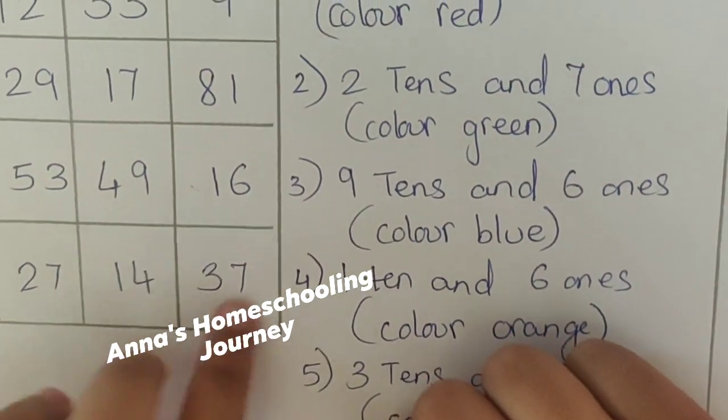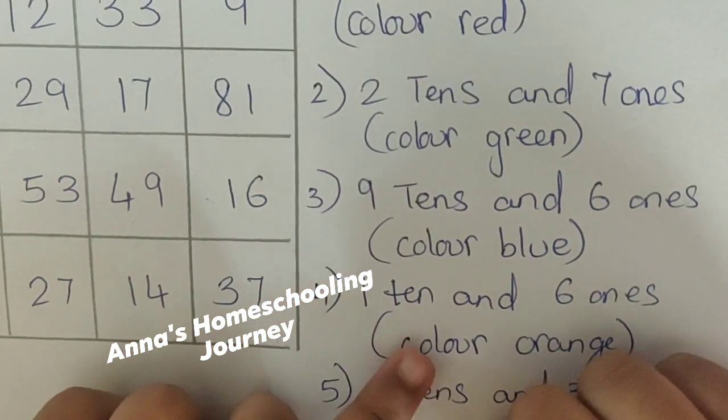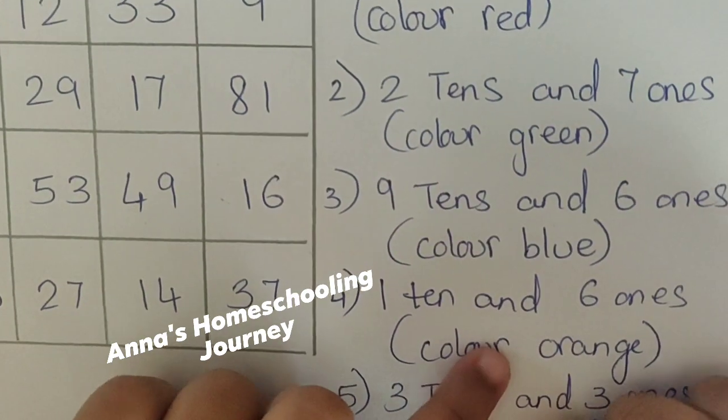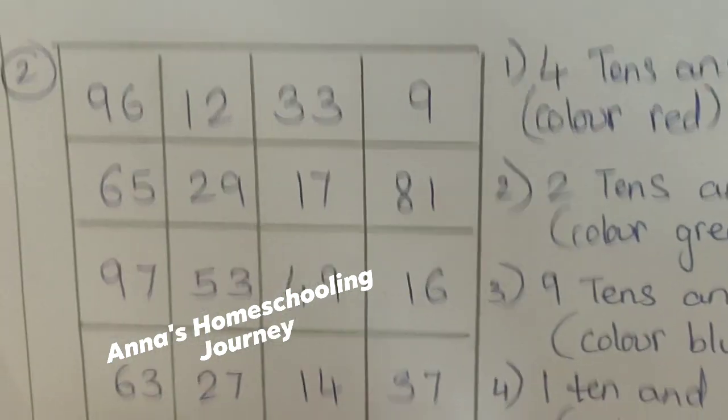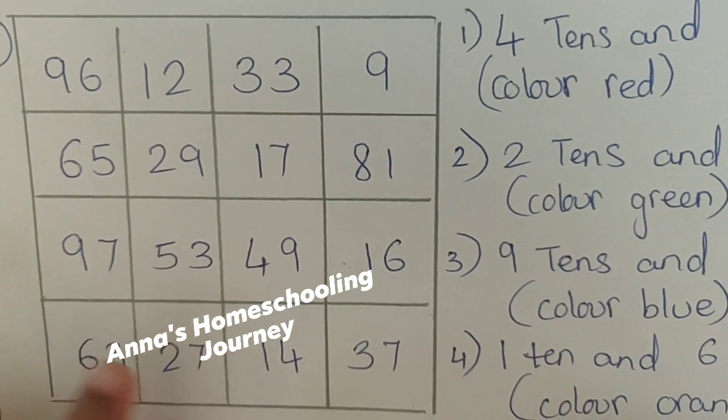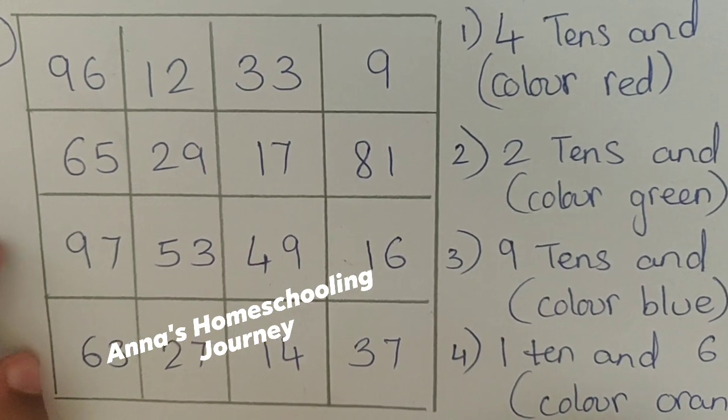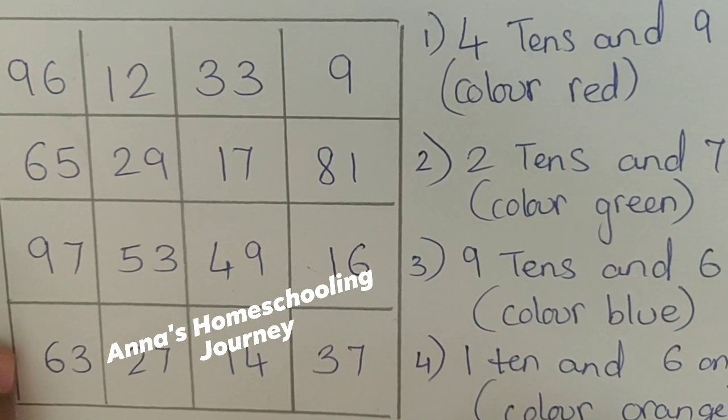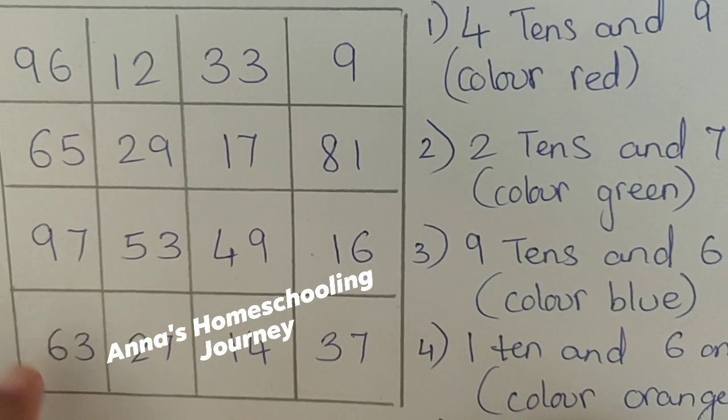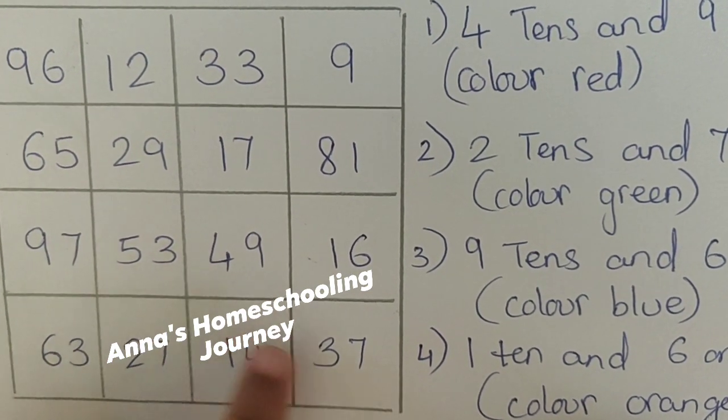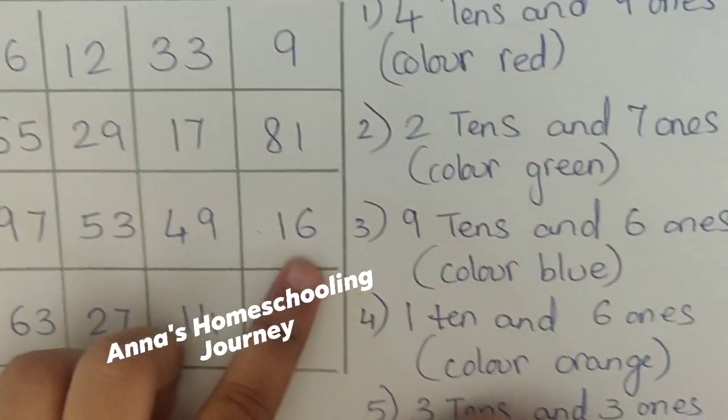Next. Fourth one is? Fourth one is 1 ten and 6 ones. Very good. So, let's see. 1 ten and 6 ones. Very good. So, it's 16.